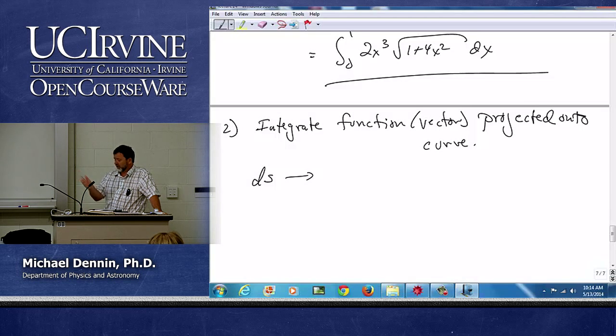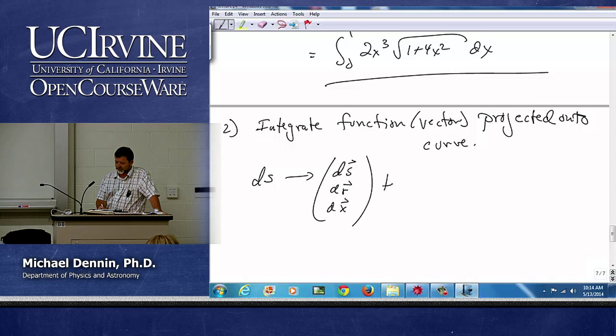What's the little piece I want to use now? I'm going to project onto the curve, instead of ds, what do I need to use? Well, I need the tangent to the curve. I need the ds as a vector, also known as dr, also known as dx. So the tangent differential, for lack of a better word.